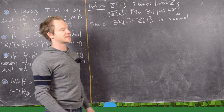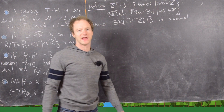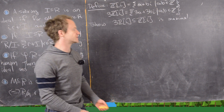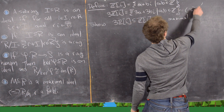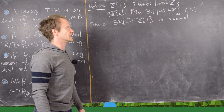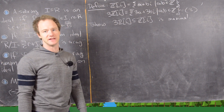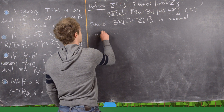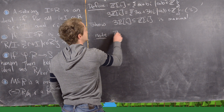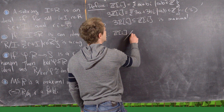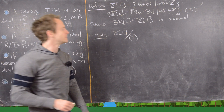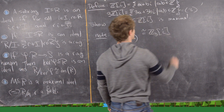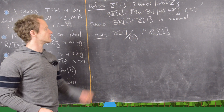For the next example, consider the Gaussian integers Z[i] — all numbers of the form a+bi where a,b are integers — and the ideal 3Z[i], the principal ideal generated by 3. Our goal is to show this ideal is maximal. First, notice that Z[i]/(3Z[i]) is clearly isomorphic to Z₃[i].